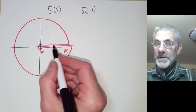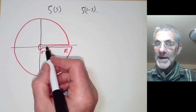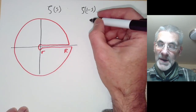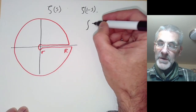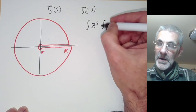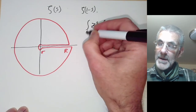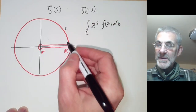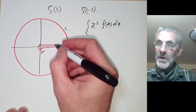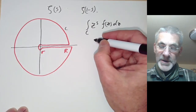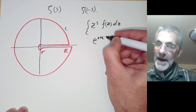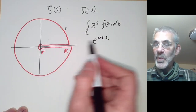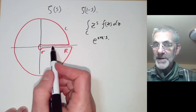You might think the two integrals along the real axis cancel out because you're going along them in opposite directions. In fact they sometimes don't, because you often integrate functions of the form z to the s, and z to the s is one of these multi-valued functions. When you go around the origin it changes by a factor of e to the 2πis, so one integral is e to the 2πis times the other.